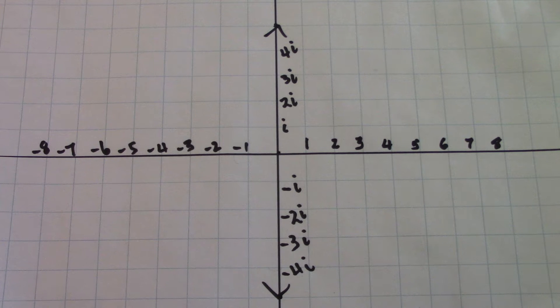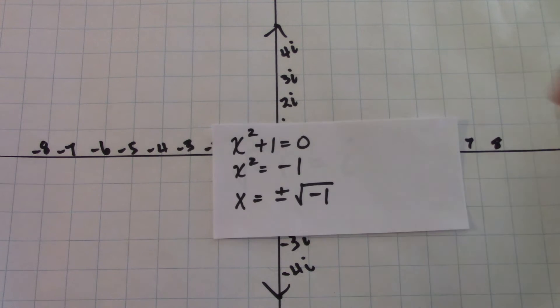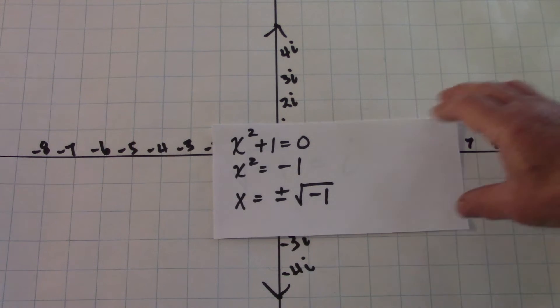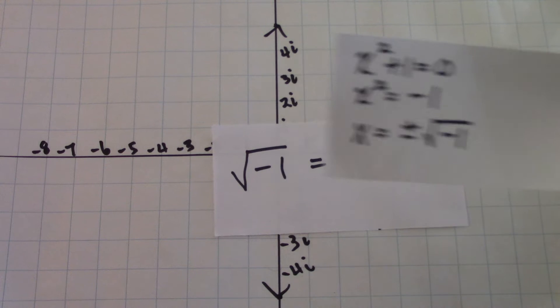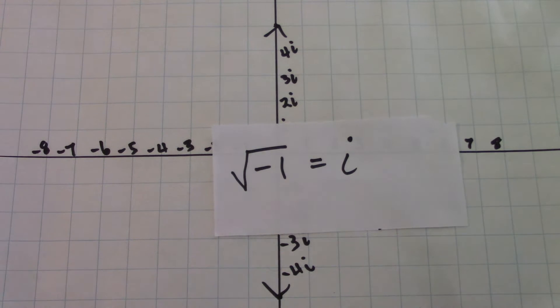Then we begin taking algebra two. As we studied algebra two, we dealt with polynomials that had degree greater than one. In other words, solving an equation such as x squared plus one equals zero. Now, if you solve for x in this equation, you get x equal plus or minus the square root of negative one. Well, it was time to introduce a new number. That new number is square root negative one. That number is simply called i.